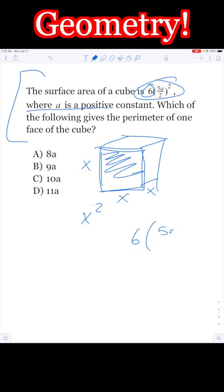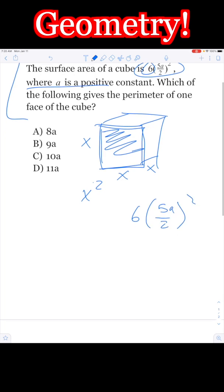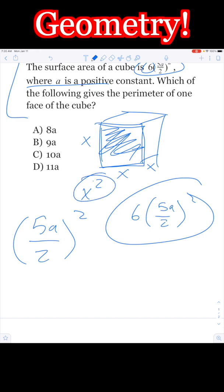It's 6 times 5a over 2 squared, which means if I divide the surface area by 6, I'm going to get just one face, that's 5a over 2 squared. Now remember, one face is going to be x squared, which means each side is then 5a over 2.